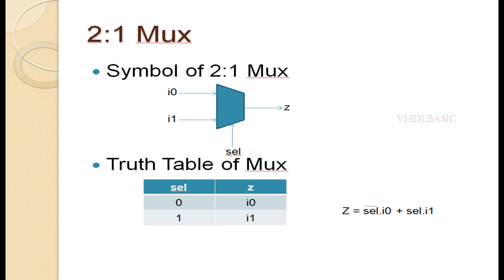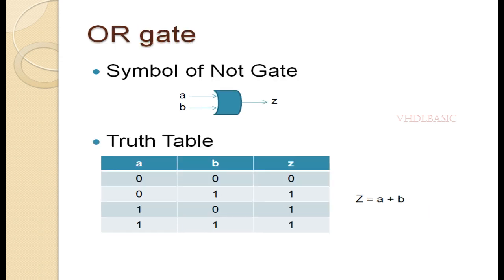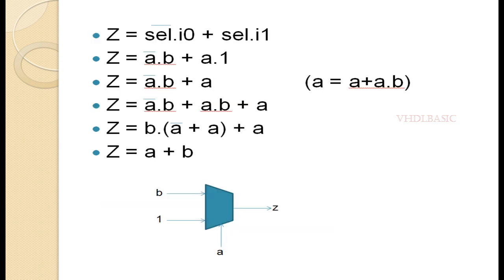This is the OR gate symbol diagram where A and B are inputs and Z is the output. From the truth table, if any one of the inputs is 1, the output will be 1. The expression of the OR gate is Z equals A plus B.